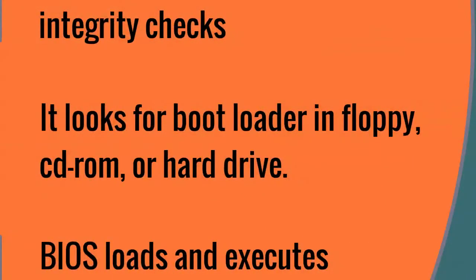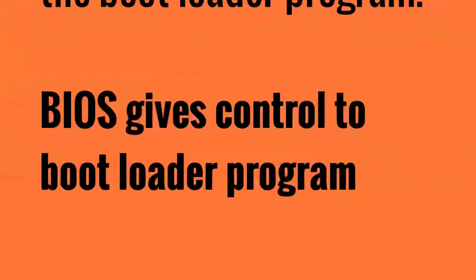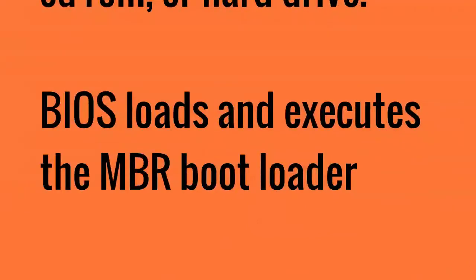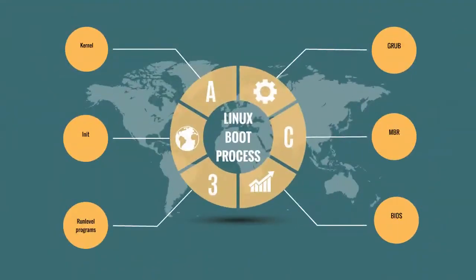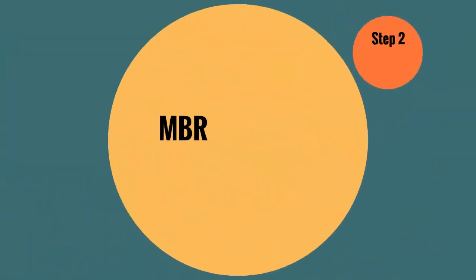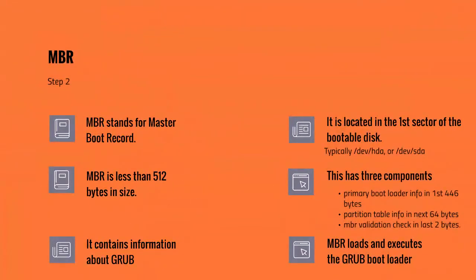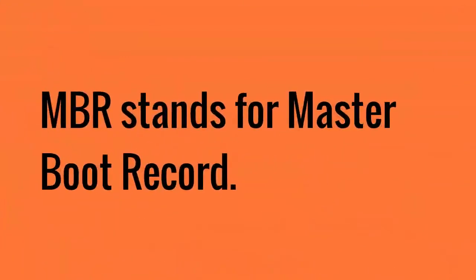It looks for the bootloader in floppy, CD-ROM, or hard drive. You can press a key — typically F12 or F2, but it depends on your system — during the BIOS startup to change the boot sequence. Once the bootloader program is detected and loaded into memory, BIOS gives control to it. In simple terms, BIOS loads and executes the MBR bootloader.